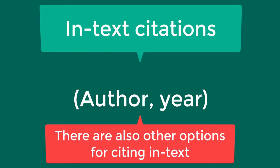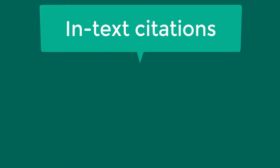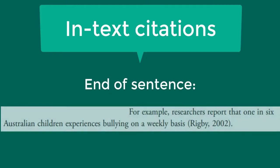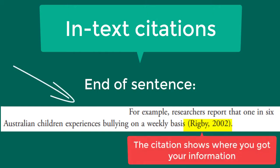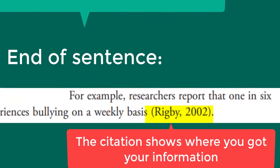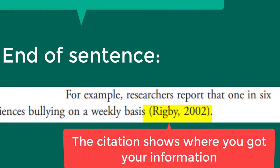There are two ways to use in-text citations. The first is to put the citation at the end of the sentence, where the whole citation is in parentheses. In this case, you'll write a statement that includes information from a source — that means information that is not your own — then you include your in-text citation.